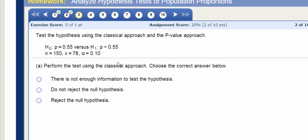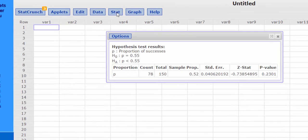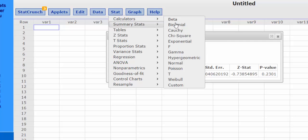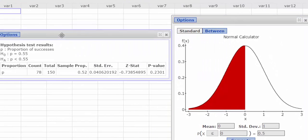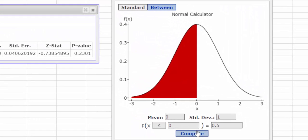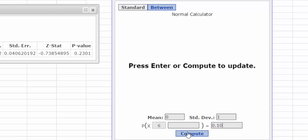So first let's do it using StatCrunch, and then I'll show you how to use the table. Under StatCrunch, we're going to press Stat, Calculators, and this is Normal. So here's our Normal curve. And our level of significance was 0.10, and this was a left-tailed test, so I pressed Compute.